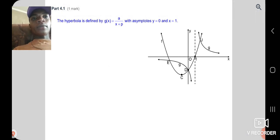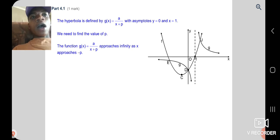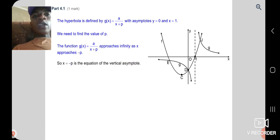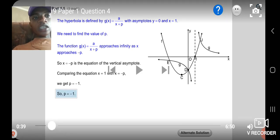The hyperbola is defined by g(x) = a over x plus p with asymptotes y = 0 and y = -1. We need to find the value of p. The function g(x) = a/(x + p) approaches infinity as x approaches -p. So y = -p because p when it come out must change a sign. So p = -1 because of that asymptote y = -1.